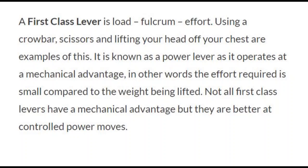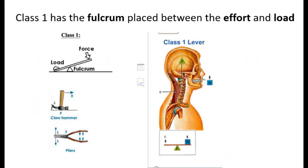Not all first-class levers have mechanical advantage, but they're better at controlling power moves. For instance, if you take a crowbar, you can pick up something much heavier than you can if you just try to pick it up by hand. Here are some examples — you can see the load, the force, and the fulcrum. A hammer pulling out a nail, a pair of pliers, or lifting your head back.